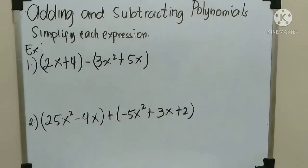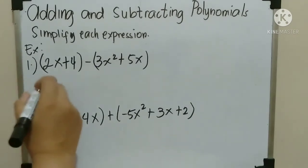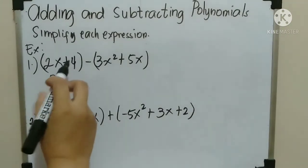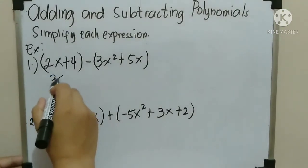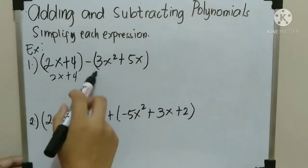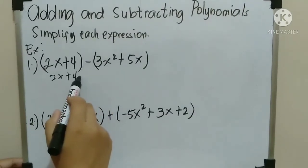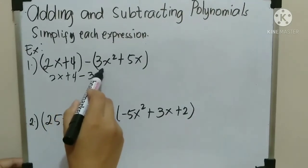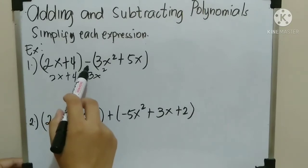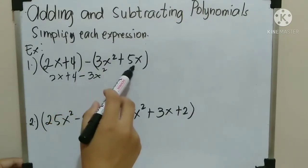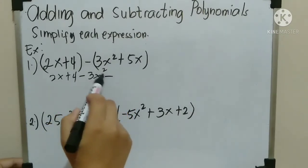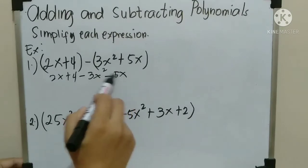We have (2x + 4) minus (3x² + 5x). We copy 2x plus 4. Then, negative times 3x squared — that is negative 3x squared. Next, negative times positive 5x — the answer is negative 5x.